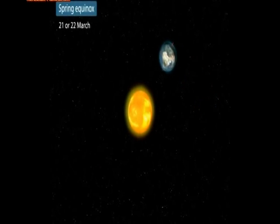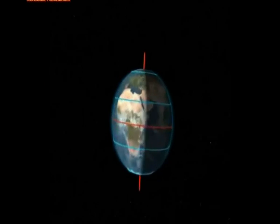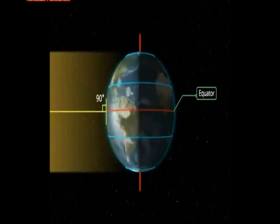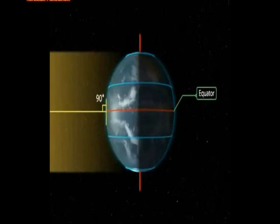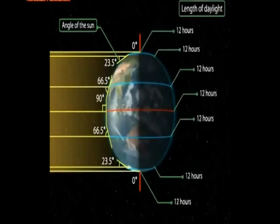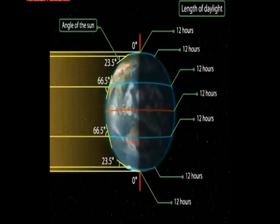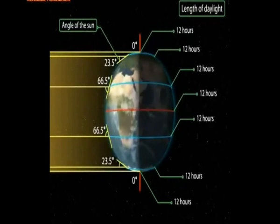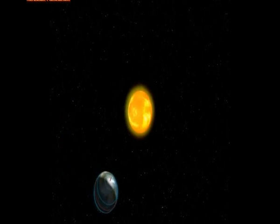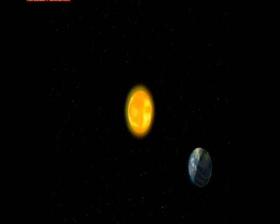Spring Equinox: On the 21st or 22nd of March, the overhead sun is over the equator, which receives the largest amount of solar radiation. At this time, the northern hemisphere is in the spring equinox while the southern hemisphere is in the autumn equinox. The angle of the sun decreases towards the poles. On this day, the two hemispheres receive a similar amount of solar radiation and the length of day and night is the same at all places on earth. After this day, it is spring in the northern hemisphere where the day is longer than the night, while in the southern hemisphere it becomes autumn when the day is shorter than the night.